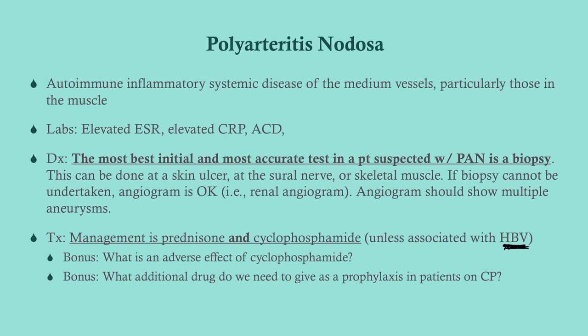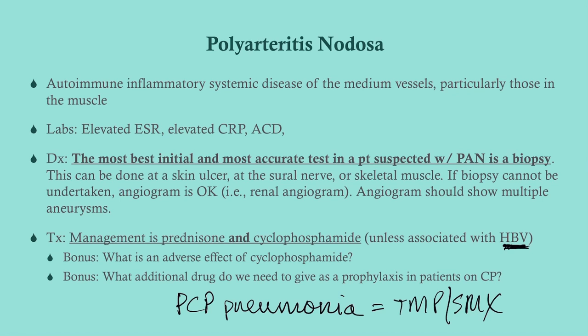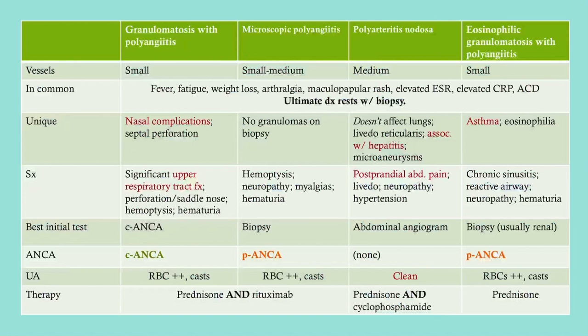An important adverse effect of cyclophosphamide is hemorrhagic cystitis — give mesna for prophylaxis. Also, because cyclophosphamide is immunosuppressive, these patients are at risk for PCP pneumonia, just like HIV patients. Give trimethoprim-sulfamethoxazole for PCP prophylaxis. Review opportunistic infection prophylaxis from HIV/AIDS if needed — the same principles apply to immunosuppressed vasculitis patients on cyclophosphamide.